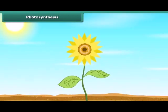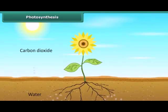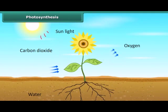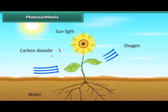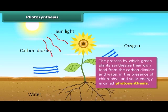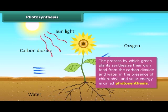As we know that green plants synthesize their own food. But do you also know how they synthesize their own food? Green plants make their own food by the process of photosynthesis. Photosynthesis is a process by which green plants synthesize their own food from carbon dioxide and water in the presence of chlorophyll and solar energy.